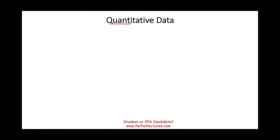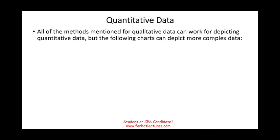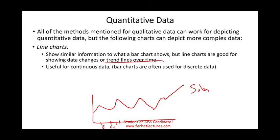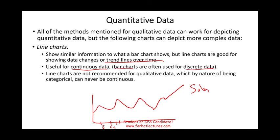Now let's talk about techniques that deal with quantitative data. All the methods that we mentioned for qualitative data can also work to show quantitative data. But we can have better charts for quantitative data. One of them is line chart. Line charts show similar information to what a bar chart would show, but line charts are good for showing data across time. For example, here it could be monthly: January, February, March. And this could be sales. We can see how sales is changing over time. Useful for continuous data. Bar chart is usually good for discrete data. And line charts are not recommended for qualitative data.